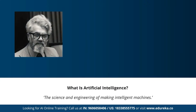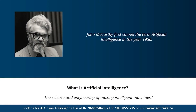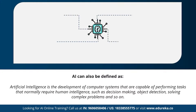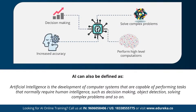The term artificial intelligence was first coined by John McCarthy, who defined AI as the science and engineering of making intelligent machines. In other words, artificial intelligence can also be defined as the development of computer systems capable of performing tasks that require human intelligence, such as decision making, object detection, and solving complex problems. The main features of AI are decision making, solving complex problems, performing high-level computations, and increasing the accuracy of predictions.